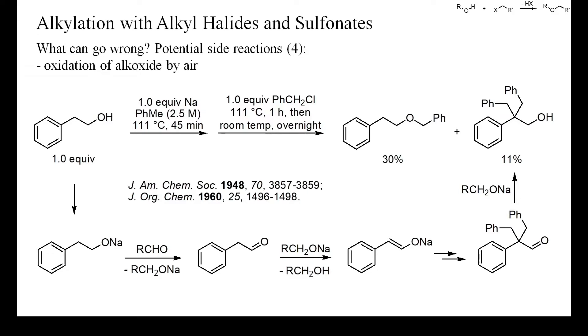Oppenauer oxidation of the starting alkoxide yielded an aldehyde enolate that was benzylated twice at carbon and finally reduced again by the starting alkoxide. Such side reactions can be avoided by adding small amounts of reducing agents to the reaction mixture. In this instance, a slight excess of sodium may have led to a higher yield of the expected ether.